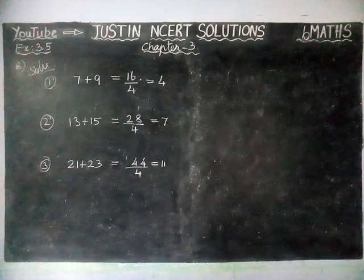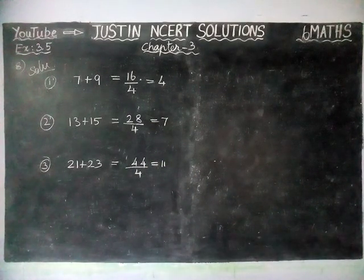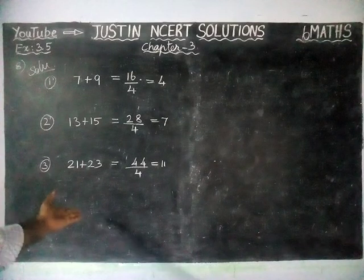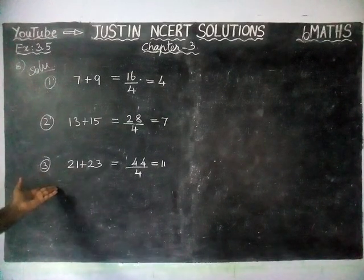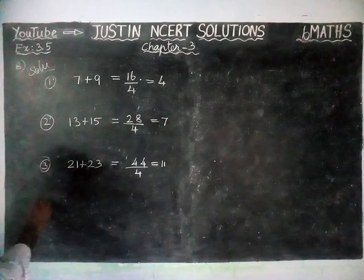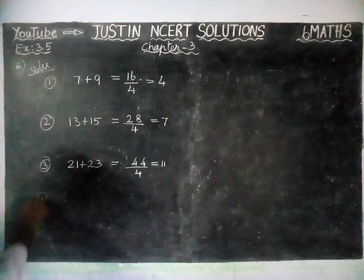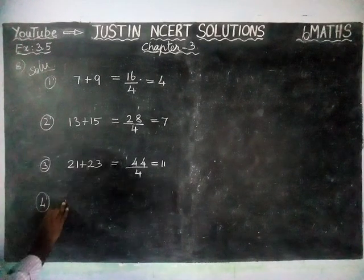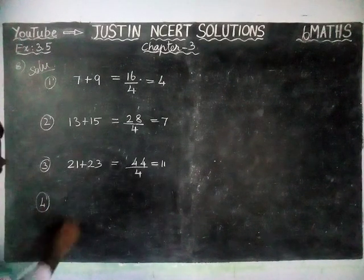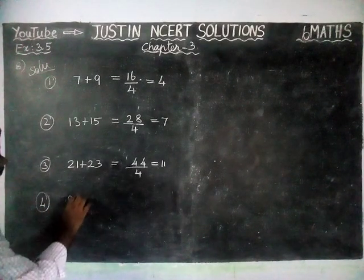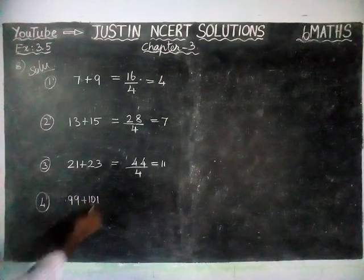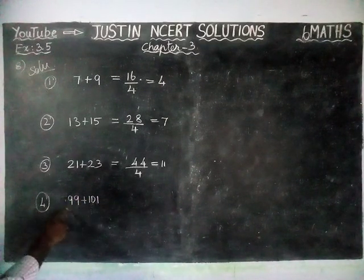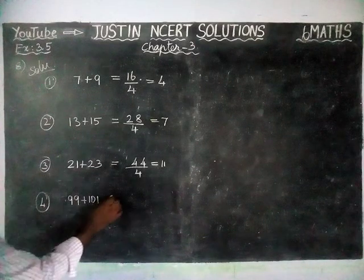So according to the statement, the sum of two consecutive odd numbers is divisible by 4. We saw three examples. We will check another one — the fourth example. We will take the numbers 99 plus 101. 99 and 101 are two consecutive odd numbers.